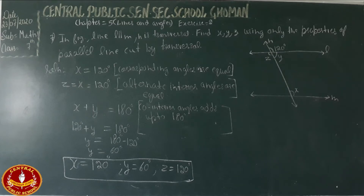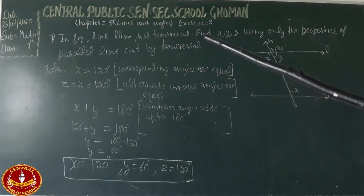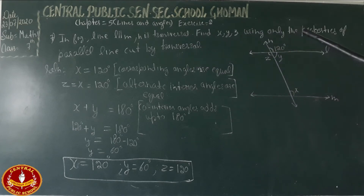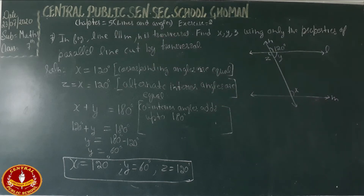The transversal cuts both parallel lines. We have to find the values of x, y, and z using the properties of parallel lines cut by a transversal.